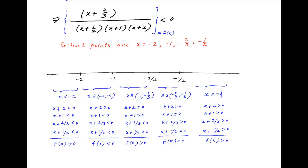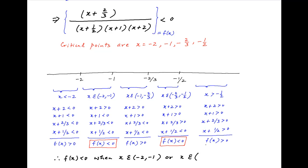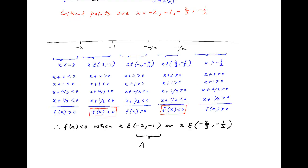To summarize, f(x) is negative — satisfying the above inequality — when x lies in the interval (minus 2, minus 1) or when x lies in the interval (minus 2/3, minus 1/2). And this is the required answer.